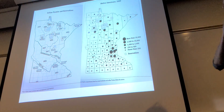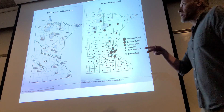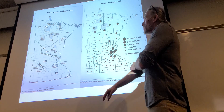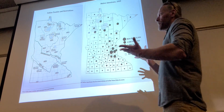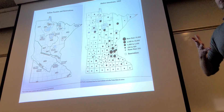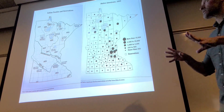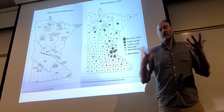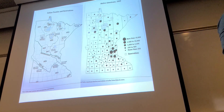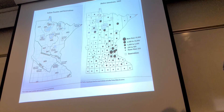Looking at maps of reservations also gives the impression that most Native Americans live out in those areas. But actually, most Native Americans just live in cities in regular housing — not on reservations. There are plenty who are, but most live more centrally.